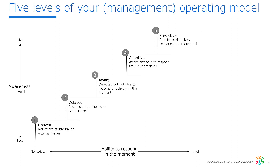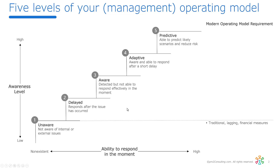What do I need in the modern operating model to get there? At the unaware level, organizations have traditional financial measures, which are lagging not only the event but our response to it. In the delayed phase, they've got better measures — financial and non-financial — but many are still slightly lagging, management meetings are periodic and not frequent enough, and processes are locked in standard operating procedures that people can't change.